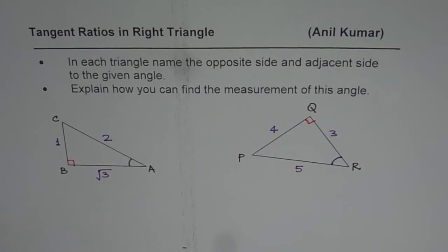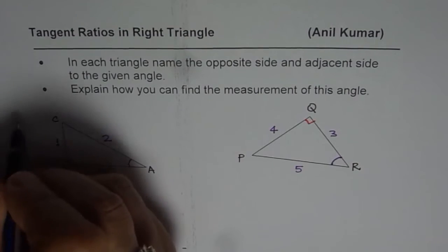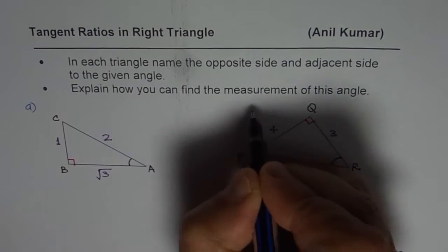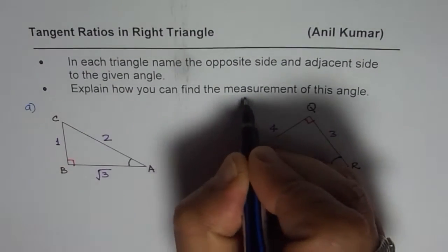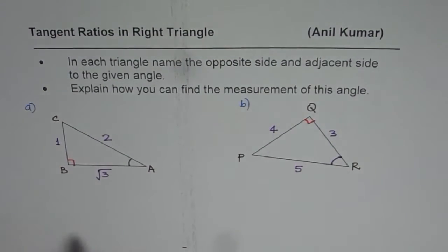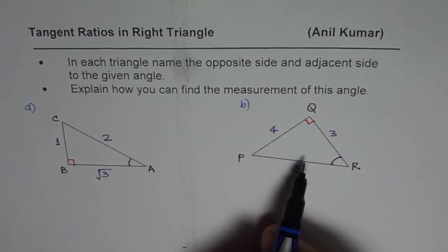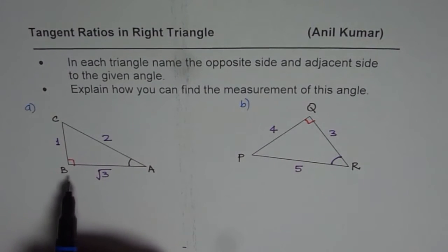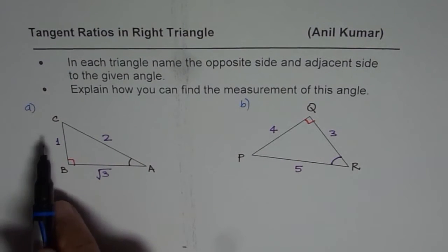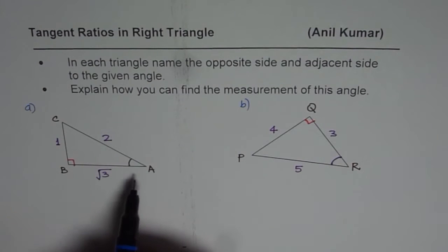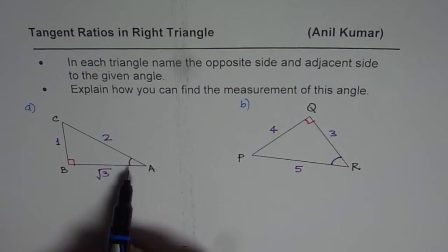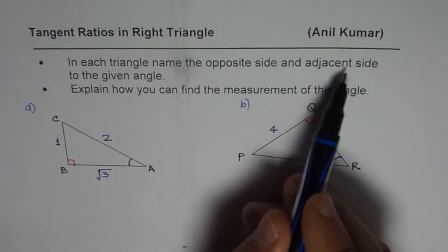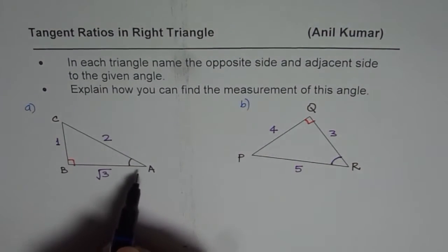We have two parts to this question and we have two different triangles to work with. These are the two different triangles. Both are right triangles as you can see. The first one is triangle ABC where we are given angle A. With respect to angle A, we need to find the opposite side and the adjacent side.